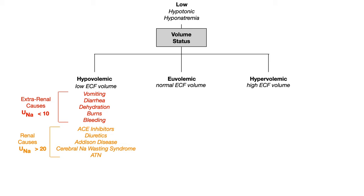Now contrasting with renal causes of hypovolemic hypotonic hyponatremia: these include ACE inhibitors or diuretics, Addison's disease, cerebral salt wasting syndrome, and ATN (acute tubular necrosis). In these renal causes, fluid loss occurs through the kidney, so when we measure urine sodium, it will appear relatively elevated.